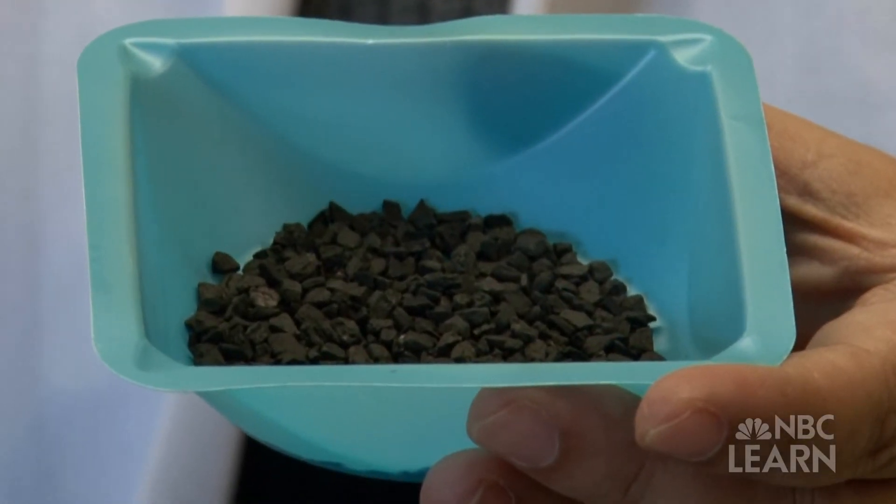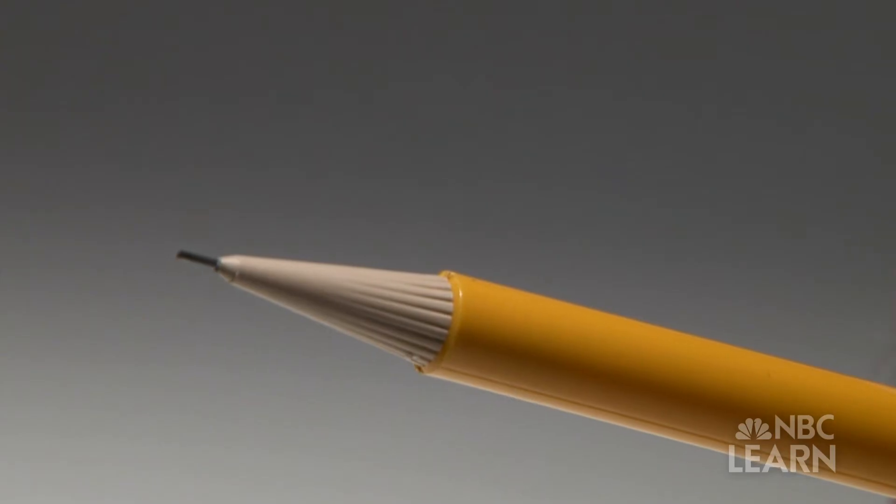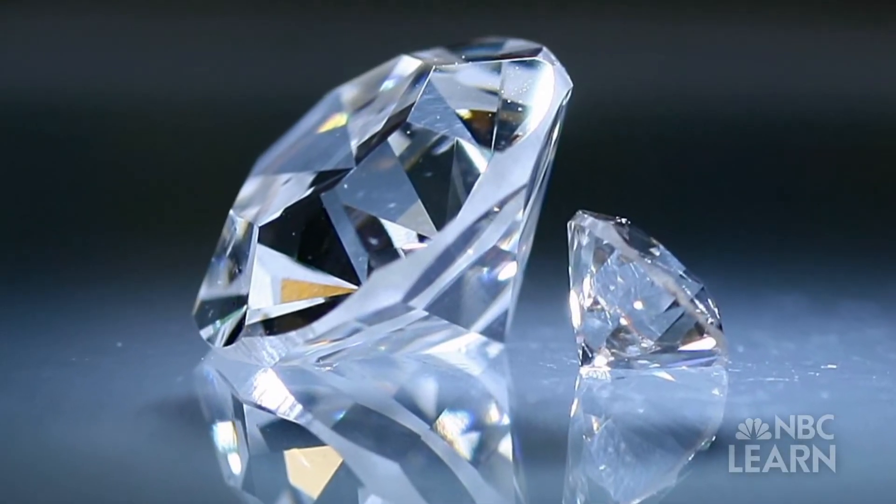In elemental form, carbon can be soft and dark in color, like graphite in a pencil, or rock hard and shiny, like a diamond.